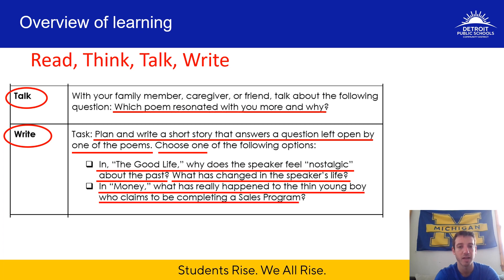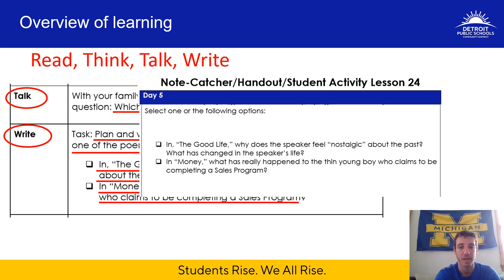The second option is for Money. In Money, what has really happened to the thin young boy who claims to be completing a sales program? You have to go back to that part of the poem and reread it. There was a point in the poem where a thin young boy came to the door to try to sell things to the family, and the author never really told you what happened to him. You have to make that inference based on what you read. You're going to write your short story in the blank space provided on the note catcher.